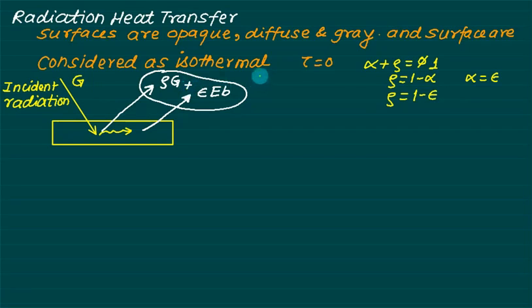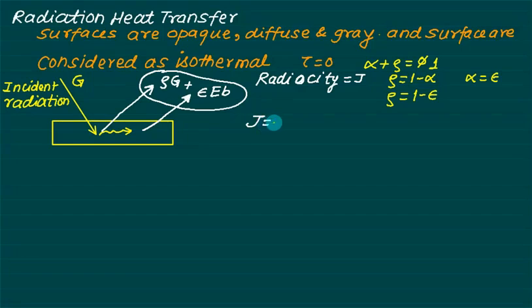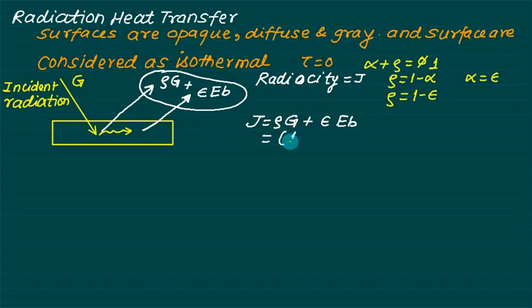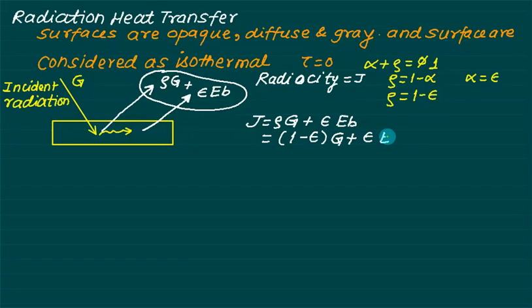The total quantity leaving the surface equals ρG + εEb. This total sum is called radiosity, represented by J. So we have J = ρG + εEb. Since ρ = 1 − ε, we can substitute to get J = (1 − ε)G + εEb.